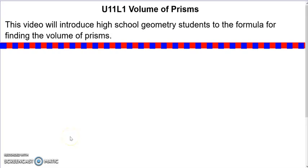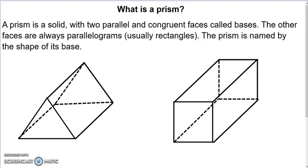In this video, we're going to talk about what makes a prism, how to find the volume of that prism, and exactly what volume is. A prism is a solid, meaning it takes up three dimensions in space — it has length, width, and height. Every prism has two parallel and congruent bases, and the other sides are always parallelograms, usually rectangles. We name prisms by the shape of the base, so identifying the base is most important.